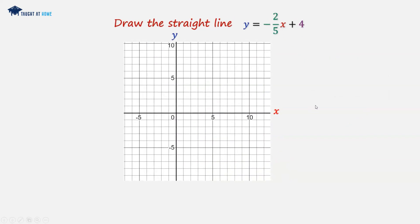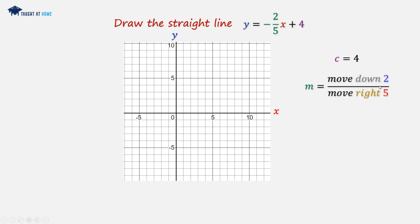Let's draw y equals minus 2 over 5x plus 4. In this case, c is equal to 4, and m is equal to minus 2 over 5. So we're going to move down 2 and move to the right 5. The first point goes where y is equal to 4, then we move down 2 and along 5, repeating until we have enough points. We can join these up with a straight line, and that is that satisfied.